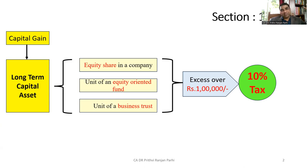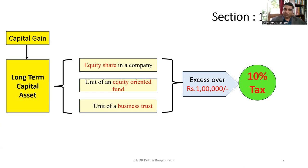There is no indexation and it has to be paid at 10 percent. For example, if the long-term capital gain is one lakh fifty thousand, then one lakh will not be taxable. The excess fifty thousand rupees is taxable at the rate of 10 percent, which means five thousand rupees is to be paid.